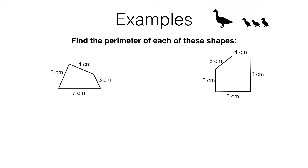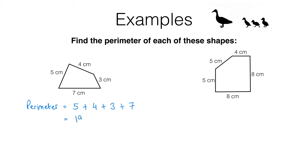Pause the video and find the perimeter of these two shapes. Here's what you should have found. The perimeter of the first shape is 5 centimeters plus 4 centimeters plus 3 centimeters plus 7 centimeters. Those are all in centimeters, so I can add them up. When I do, I get a total of 19 centimeters.